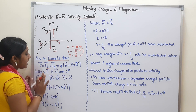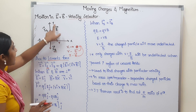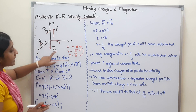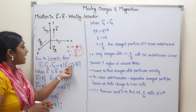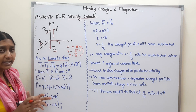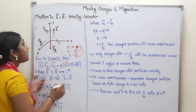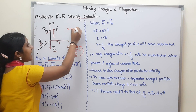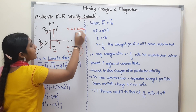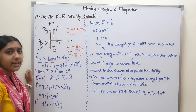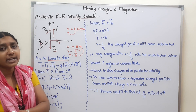The electric field is perpendicular to the magnetic field. Now, how do we represent the vectors? A vector has a scalar value and a direction — magnitude into direction. So if we have the magnitude, it is easier to write it as magnitude times direction.